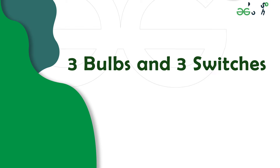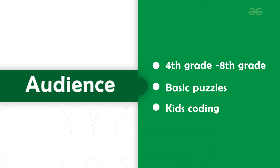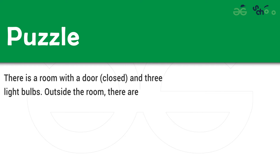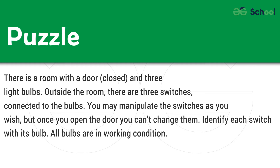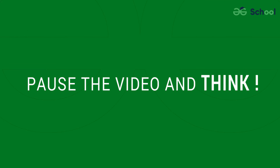3 Bulbs and 3 Switches. There is a room with a door closed and 3 light bulbs. Outside the room, there are 3 switches connected to the bulbs. You may manipulate the switches as you wish, but once you open the door you can't change them. Identify each switch with its bulb. All bulbs are in working condition. Pause the video and think.